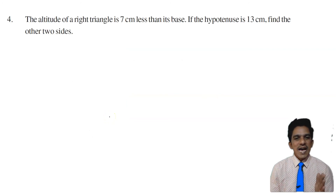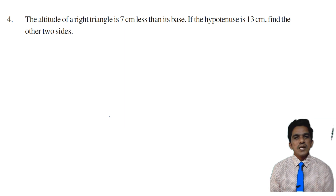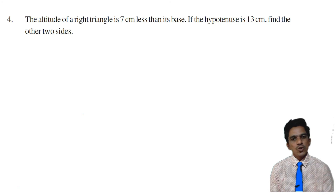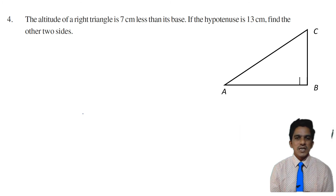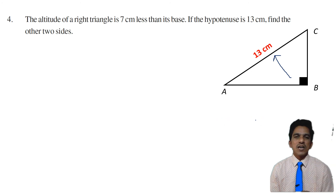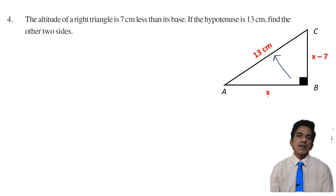Let us move to problem number 4: The altitude of a right triangle is 7 cm less than its base. If the hypotenuse is 13 cm, find the other two sides. This involves a right-angle triangle. Let us consider right triangle ABC where the right angle is at B, so AC is the hypotenuse equal to 13 cm. Let AB be the base x, then altitude BC will be x minus 7, since the altitude is 7 cm less than the base.